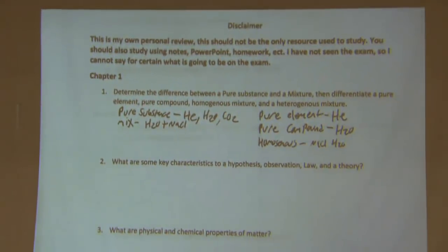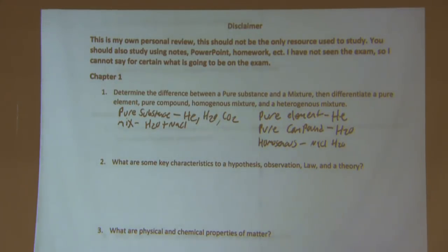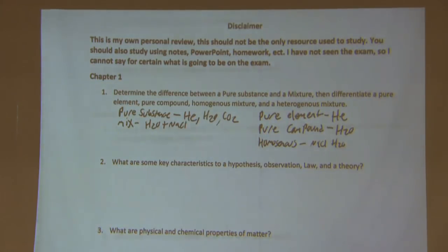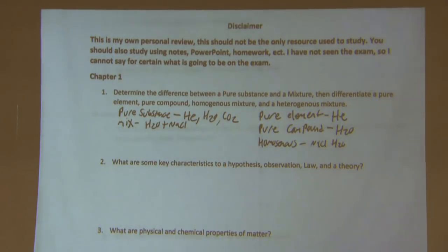Student question: what's an example of a compound that's not a pure compound? A non-pure compound would just be a mixture — a mixture of two different things. So a pure substance is either an element or a compound. They have to be bonded to each other, or an element would just be an element on the periodic table.